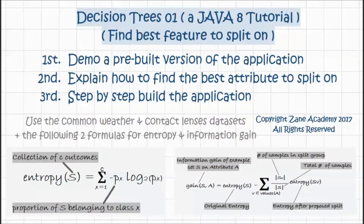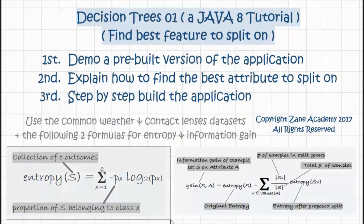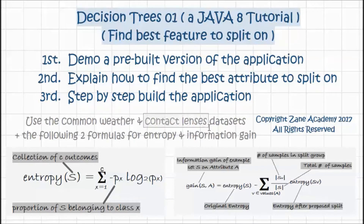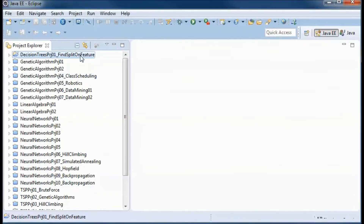This tutorial will start with a demo of a pre-built version of the application. Second, I will explain how to find the best attribute to split on using the two formulas for entropy and information gain, and the common weather and contact lenses datasets. Third, I will step-by-step build the application.